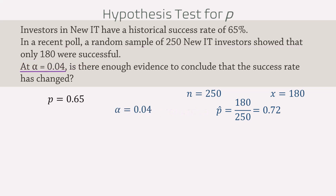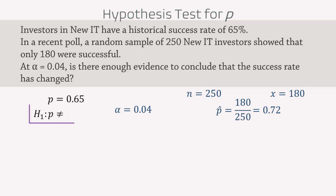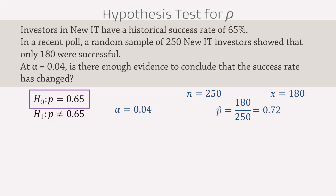At alpha equals 0.04, we want to test if there is enough evidence to conclude that the success rate has changed — that is, different from 65%. Therefore, the alternative hypothesis will be p not equal to 0.65, and the null hypothesis is p equals 0.65.